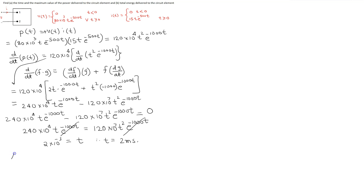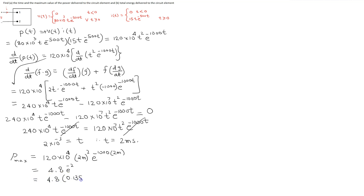To find the value of this maximum power, all we need to do is set t equal to 2 milliseconds in the instantaneous power expression. This simplifies to 2 milliseconds squared, e raised to the power minus 1000 multiplied by 2 milliseconds. This term simplifies to 4.8 e raised to the power minus 2, and this gives a value of 0.6496 watts. This is the maximum value of the power delivered to the circuit element.